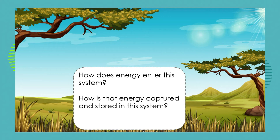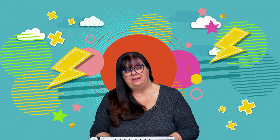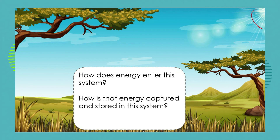Now let's look at a terrestrial, or land, food chain — one you might be familiar with living here in South Africa. We could be looking out over a grassland or savannah, maybe in the Kruger National Park. The ecosystem can't create energy; energy must come from somewhere and be transferred into the system. Here we see the sun, which is the original source of energy.